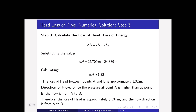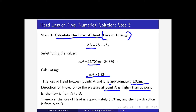Now we calculate the loss of head: ΔH = H_A − H_B = 25.709 − 24.389 = 1.32 meters. So the loss of head between point A and point B is approximately 1.32 meters. For the direction of flow: since the pressure at point A is higher than at point B, the flow is from A to B. We can also confirm from the heads — flow always goes from higher head to lower head — so the loss of head is 1.32 meters and the flow direction is from A to B.